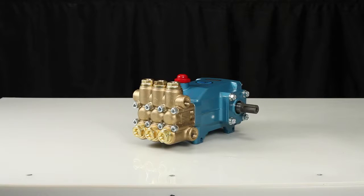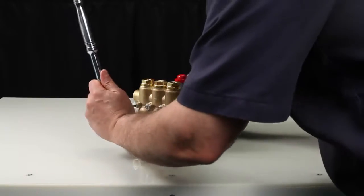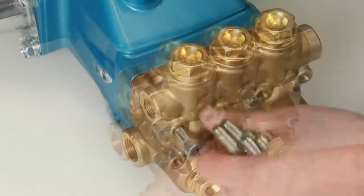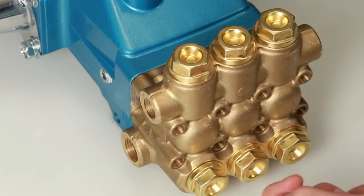To service or repair the seals, begin by removing the manifold. The manifold can be removed using a 6mm Allen wrench to remove the 8 hex socket head screws.